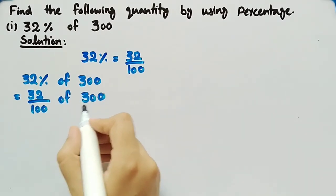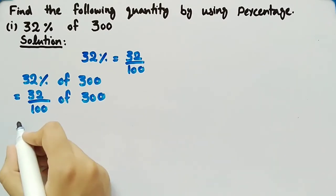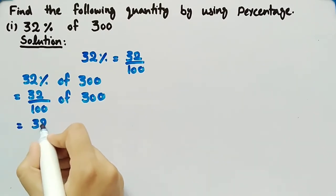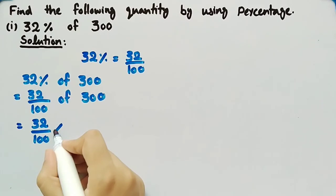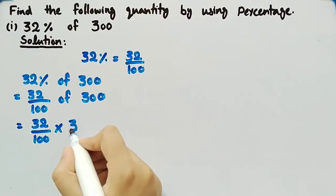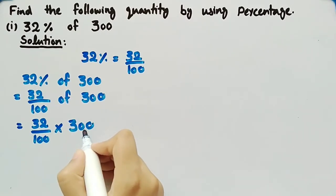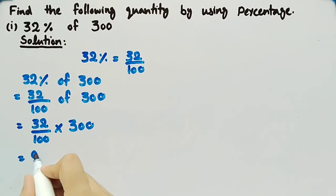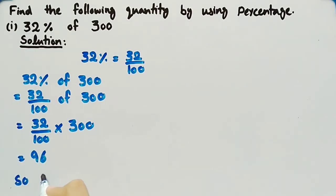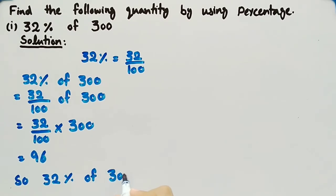32 by 100 of 300 can be written as 32 by 100 multiplied by 300. When we multiply these quantities we get 96, so 32 percent of 300 is 96.